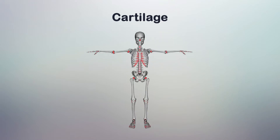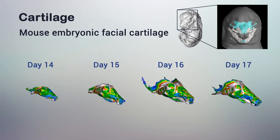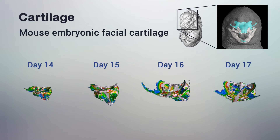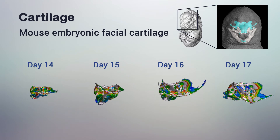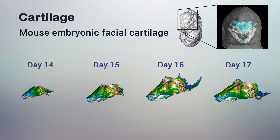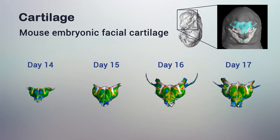Cartilage is an essential skeletal and supportive tissue in our body. The geometrical properties of cartilage elements must be fine-tuned during growth because cartilage participates in shaping of body parts and provides indispensable structural support to the organism during development.